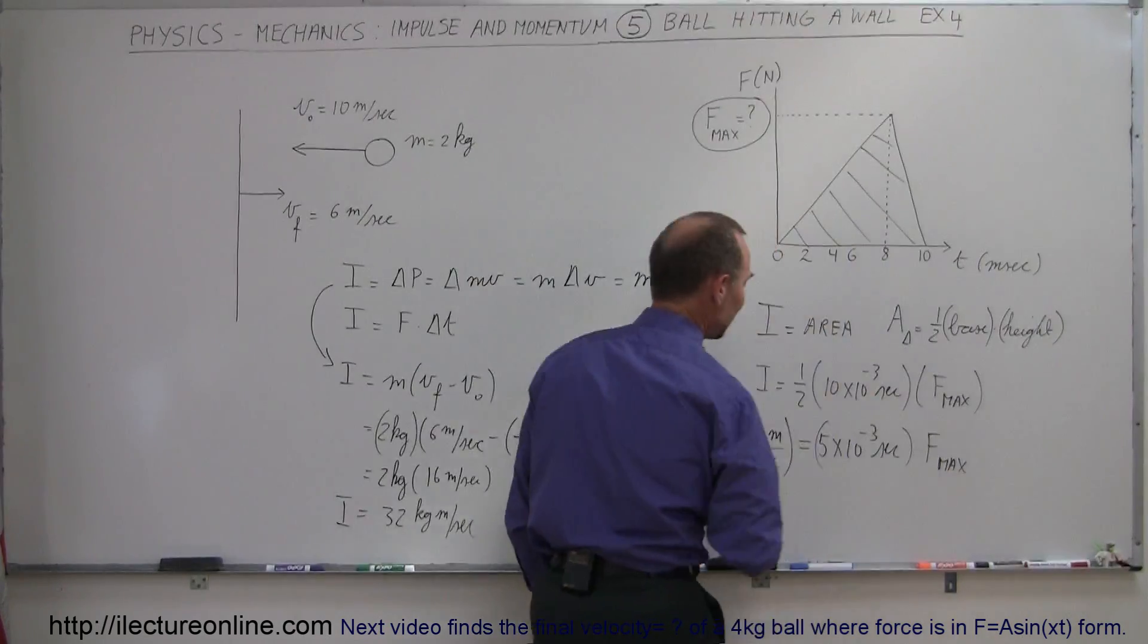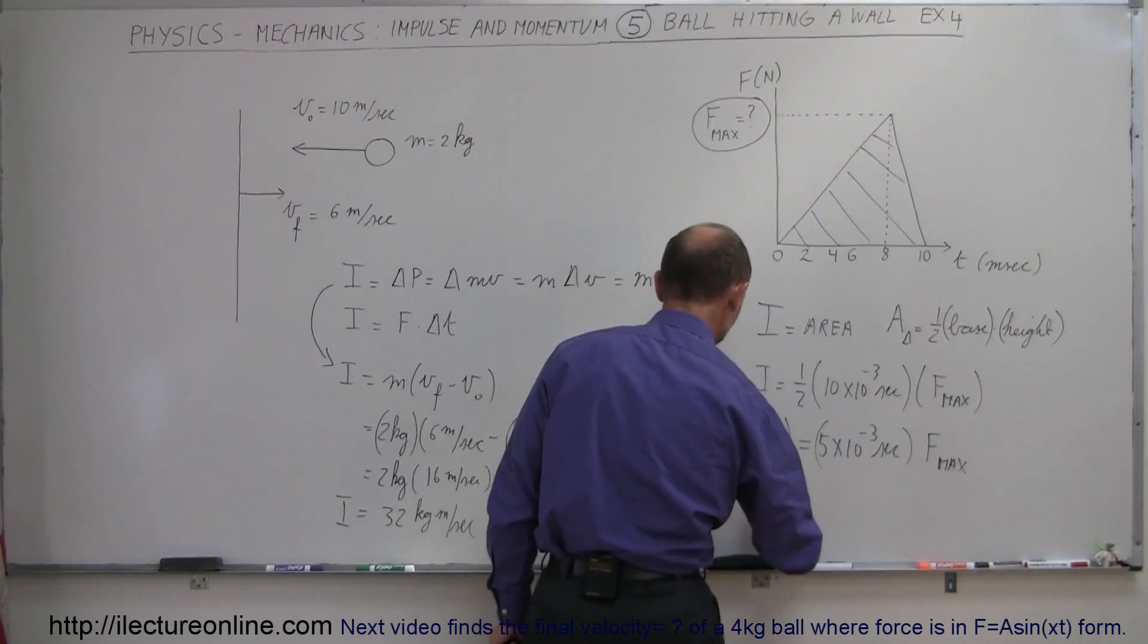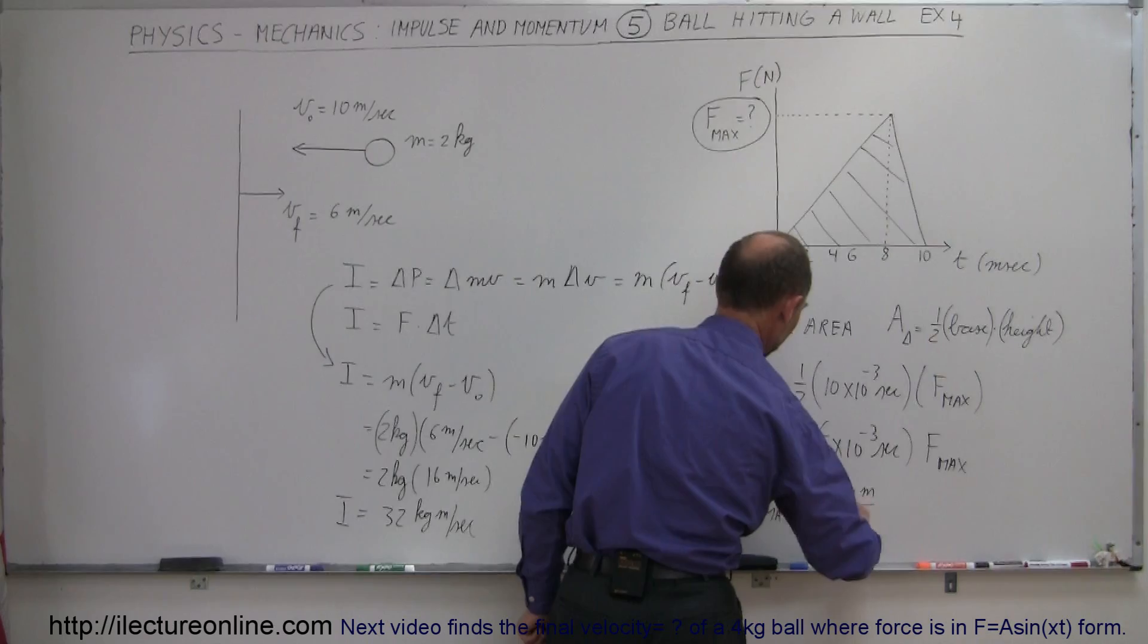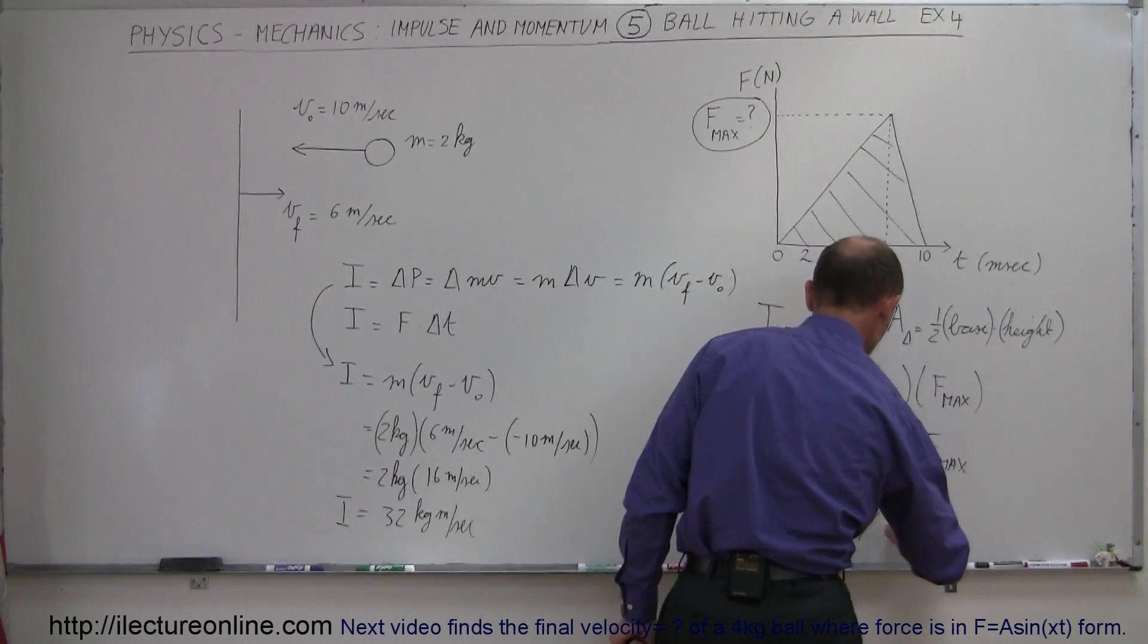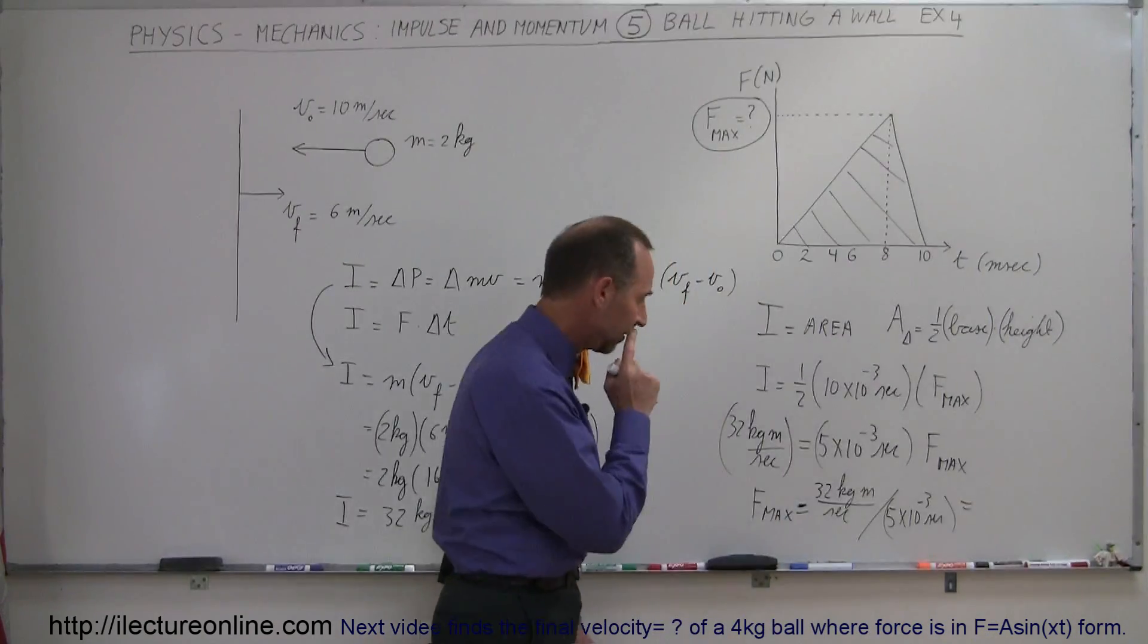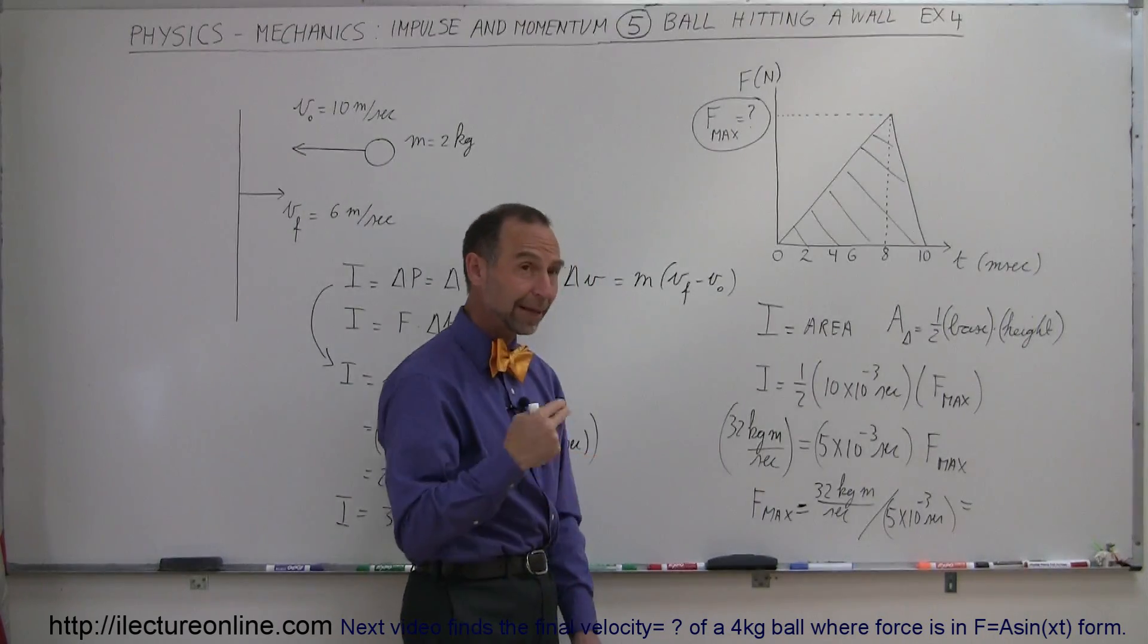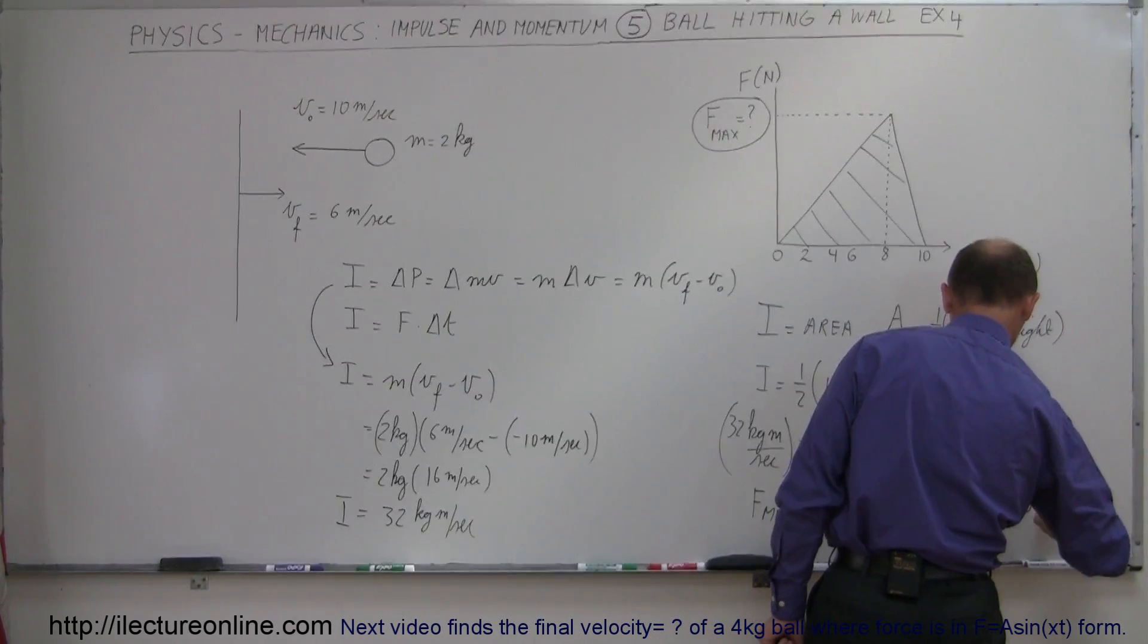So finally we can say then that F max would be 32 kilogram meters per second divided by that time. So F max is equal to 32 kilograms meters per second divided by 5 times 10 to the minus 3 seconds. And let's see, that's equal to, 5 goes into 32, that's 6.4 times, and then 10 to the minus 3 in the denominator, that would be 10 to the 3 in the numerator, that would be 6,400 newtons.